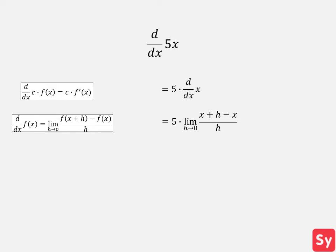This can be simplified to 5 times the limit as h approaches 0 of 1. And the limit as h approaches 0 of 1 equals 1. So this equals 5 times 1, which equals 5, our answer.